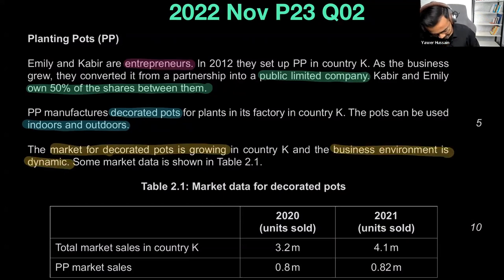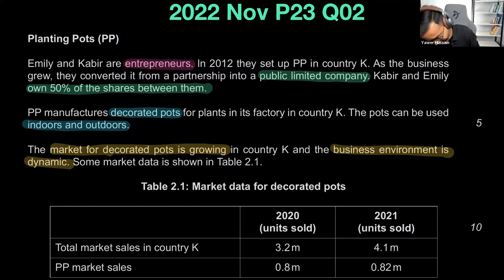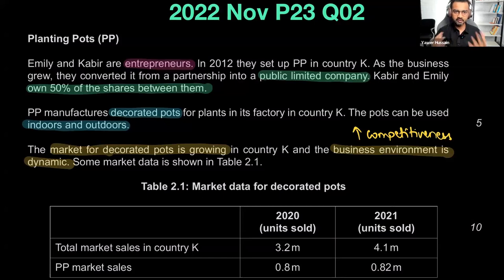When they say the environment is dynamic, that also means other businesses are competing, indicating an increase in competitiveness. PP shouldn't expect to get all the new customer base — there will be other competition entering the market. The market is growing, which is going in their favor, so they should be looking for growth. But they must also expect increased competition.